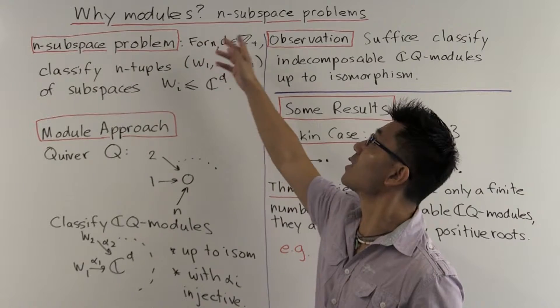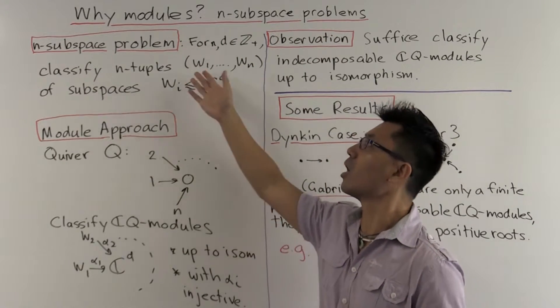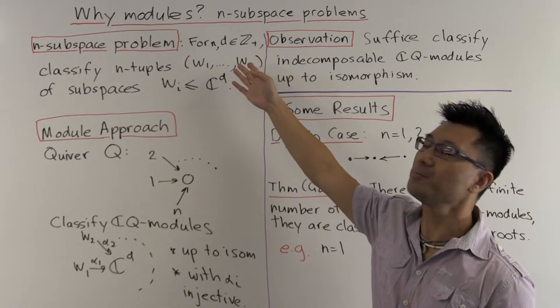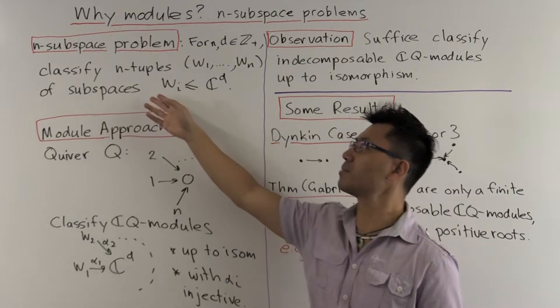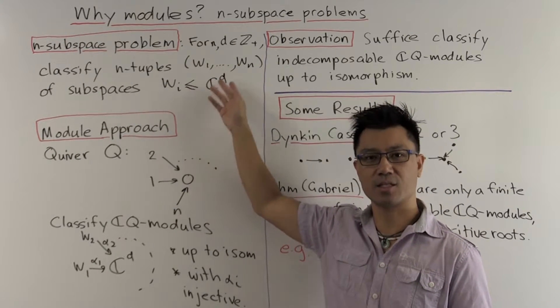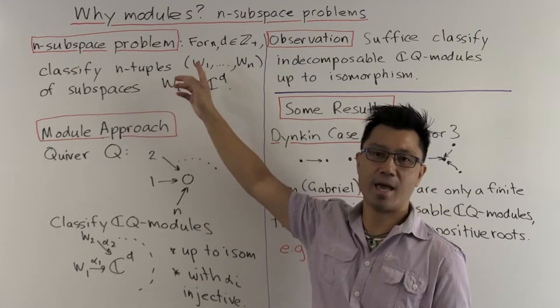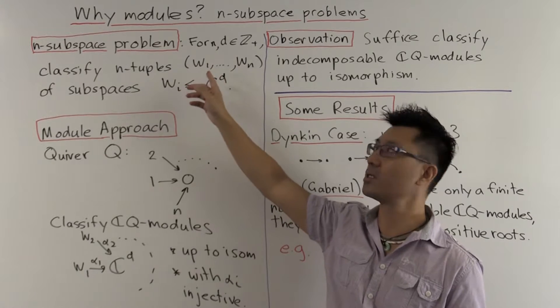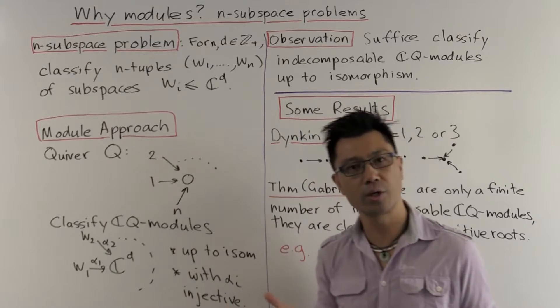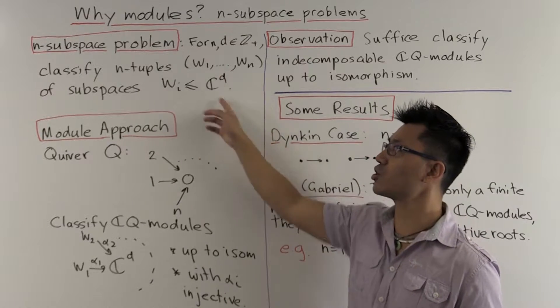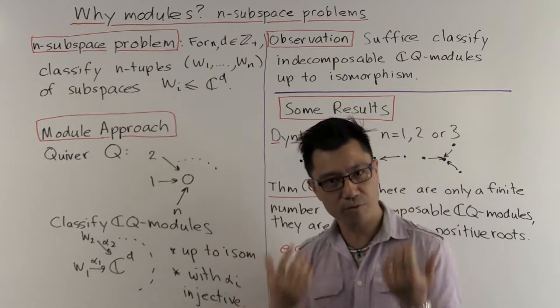It's called the n-subspace problem. To state it, we use the following notation. We start with positive integers n and d, and we look at subspaces wi of C to the d. The problem is very simply to classify n-tuples of these subspaces w1 up to wn, and we want to classify these up to coordinate change.